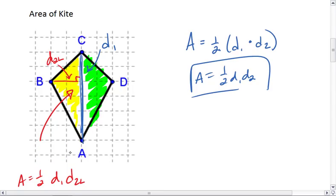Now let's look at the green area. It's a triangle, so its area is 1/2 of the base, which again is the D1 diagonal, times the height, which is the right side of D2. We'll call that D2R.